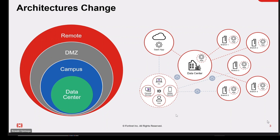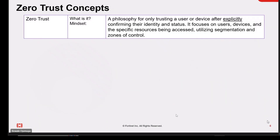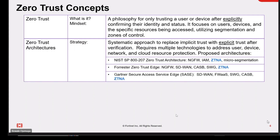The zero trust concept — the mindset behind it — is actually a philosophy of only trusting a user after explicitly confirming their identity and their status. It also focuses on users, devices, and the specific resources being assessed, utilizing segmentation and zones of control.